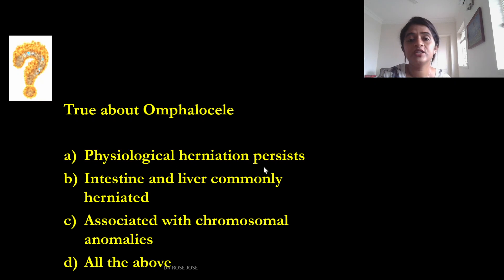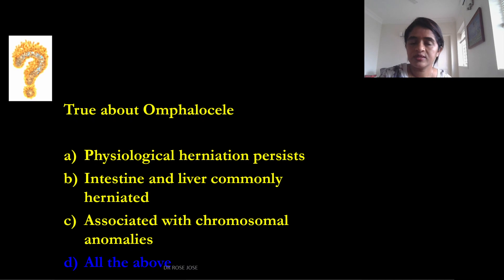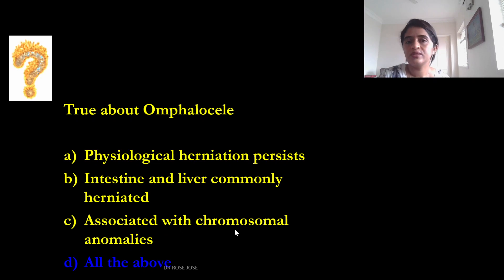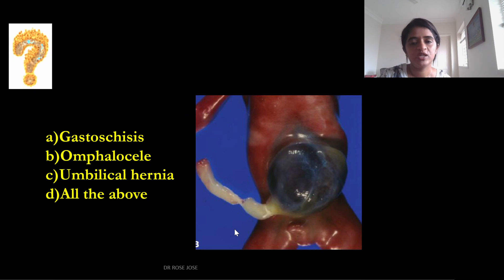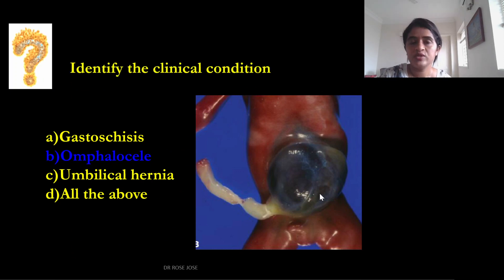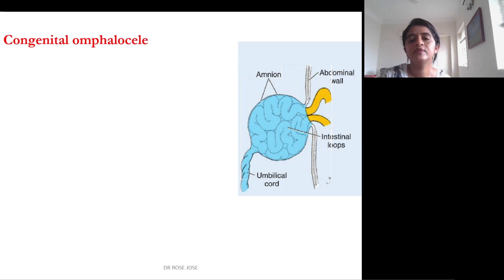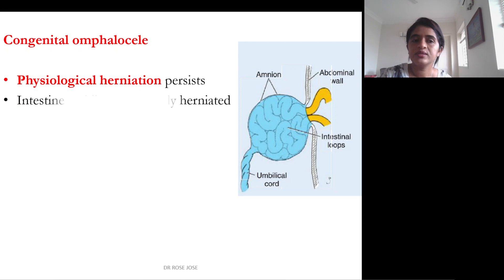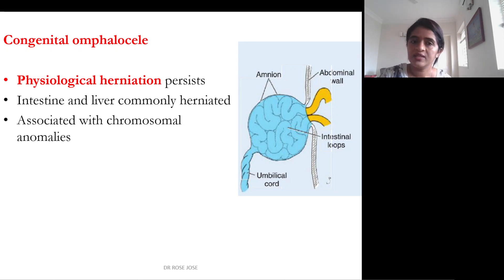Regarding omphalocele: the physiological herniation persists, intestine and liver are commonly herniated, and it is associated with chromosomal anomalies — all of the above apply. You can see loops of intestine lying outside the abdominal cavity but covered by amnion — this is omphalocele. This is congenital omphalocele, occurring when physiological herniation does not return to the abdominal cavity by roughly the 10th week. Intestine and liver are commonly herniated, and chromosomal anomalies are associated.